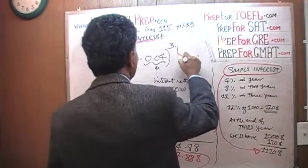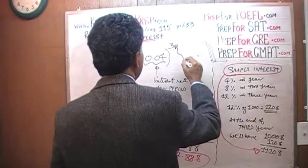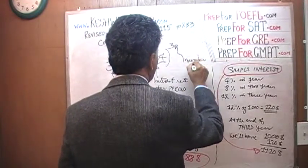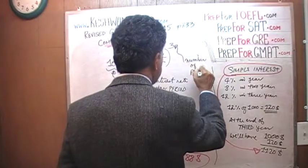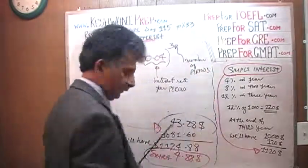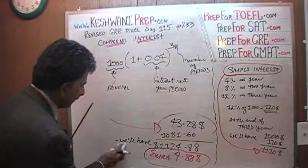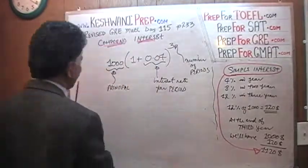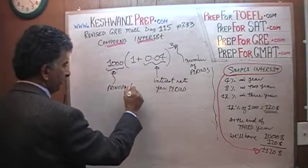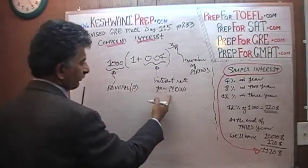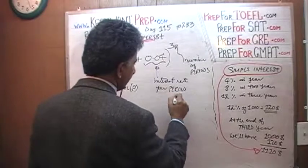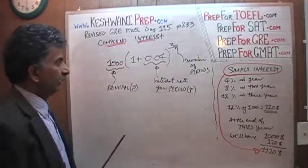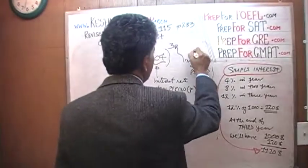And this is the number of periods. Let's write it in more general terms. For the principal, we use the letter P, interest rate per period. Interest rate per period is our rate of interest. This is R. R stands for the interest rate. And the number of periods is usually denoted by N.